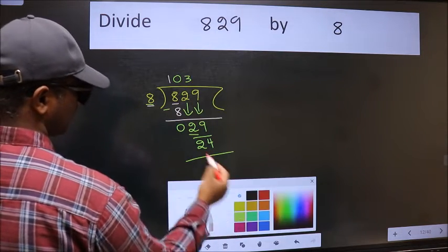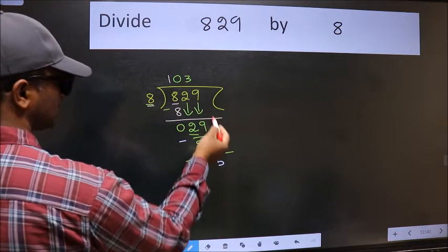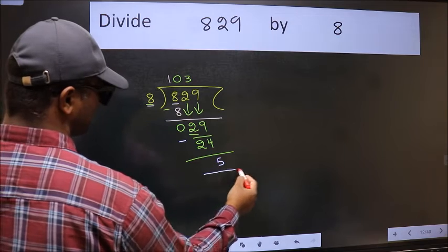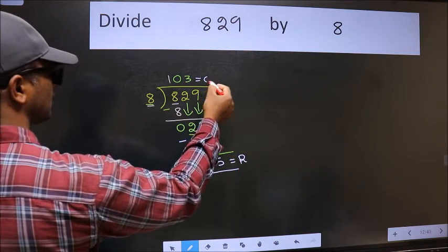Now we should subtract. We get 5. No more numbers to bring it down. So we stop here. This is our remainder. And this is our quotient.